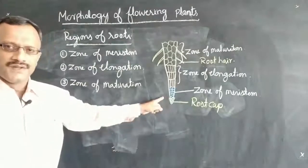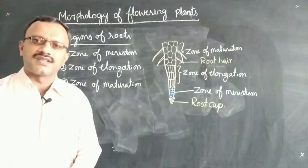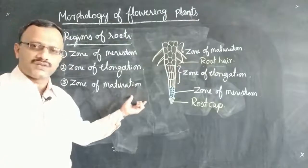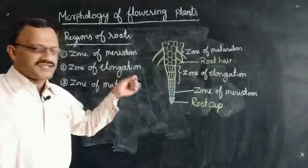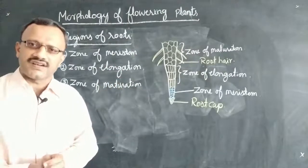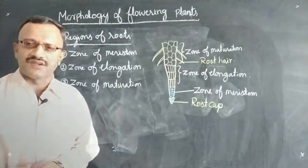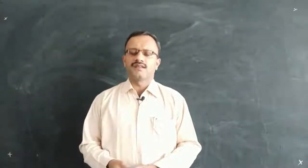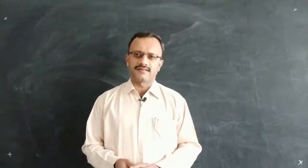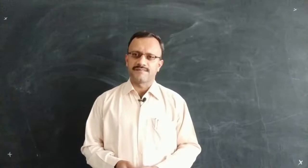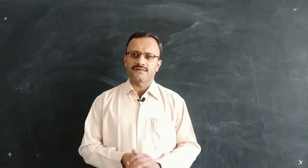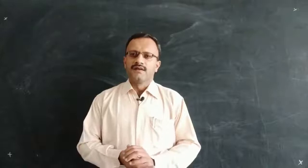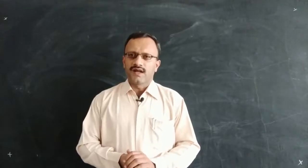Now we will pass on to the stem. This concludes our discussion about the root, its modifications, and the different regions of the root. In the next class, we will discuss other parts of the plant like the stem, leaf, and different types of leaves. Thank you and have a nice day.